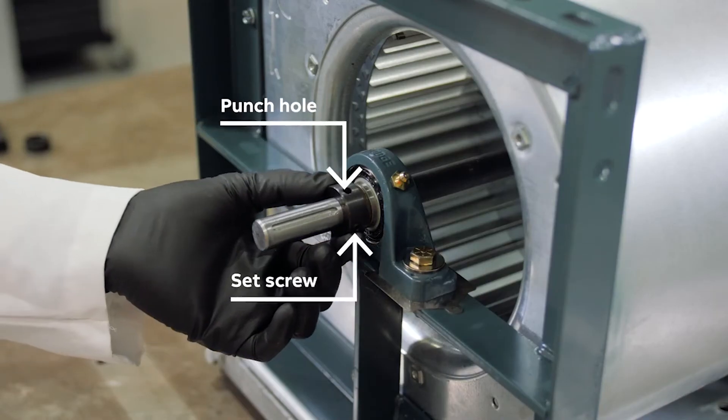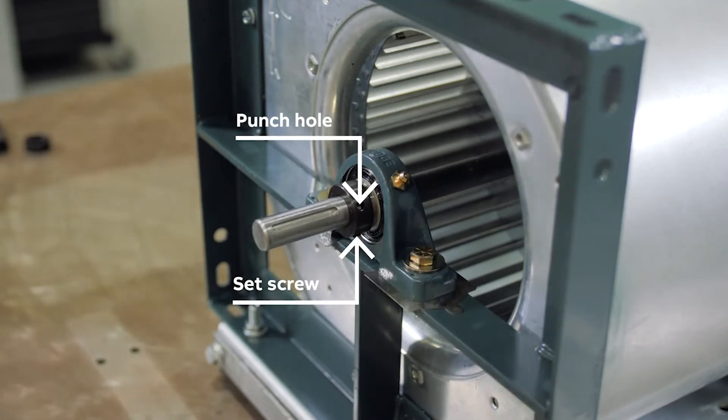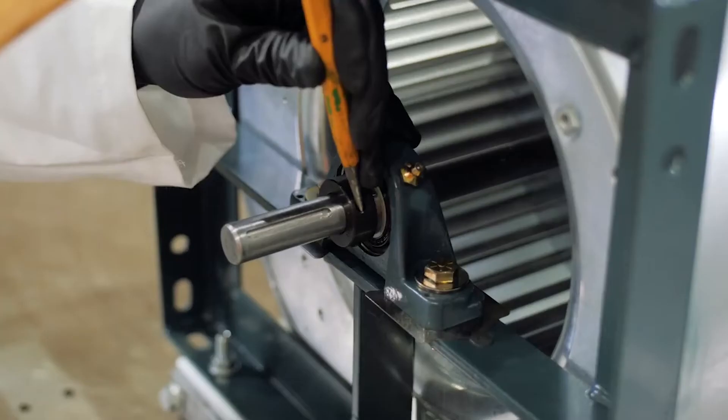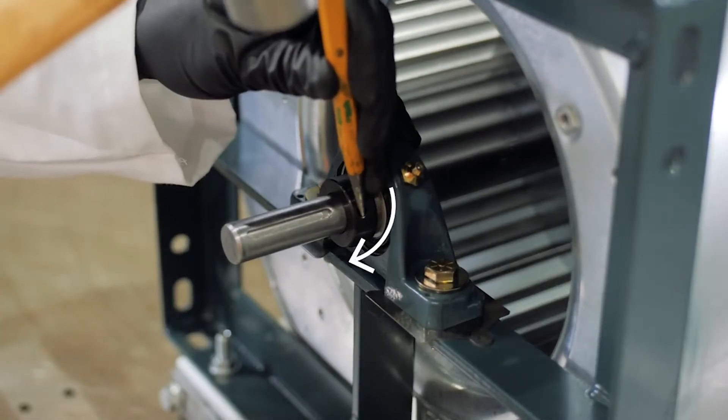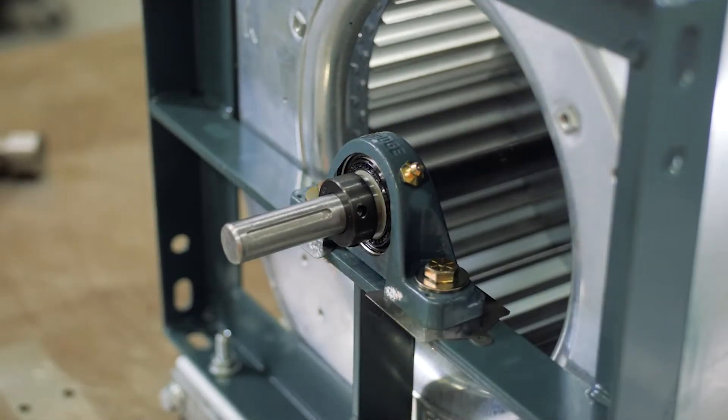Slide the collar onto the shaft and against the cam end of the inner ring. Place a punch in the hole of the collar and drive the collar in the direction of shaft rotation. As the collar is rotated, the bearing is attached to the shaft.